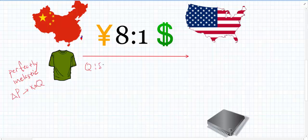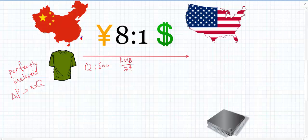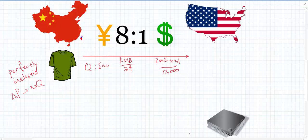If exports are perfectly inelastic, quantity remains at 500 T-shirts. Currency depreciation, at least in the short run under ceteris paribus, doesn't change the domestic price at all, because this only affects external trade. Nothing really changes for the Chinese producer or consumer internally. So the RMB price remains at 24, and the RMB export total remains 12,000 — income from selling T-shirts to the US is unchanged.